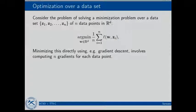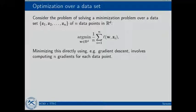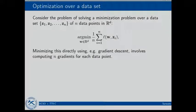The problem we're going to consider is a convex minimization problem. I want to minimize some function of n data points z1 through zn. What we want to do is minimize a sum of some loss function over the data points, where w is the d-dimensional parameter I'm optimizing over — I want to find the best w that minimizes some loss over the data.